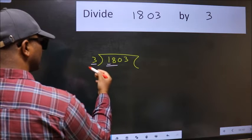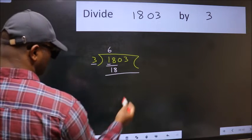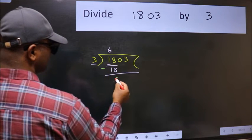When do we get 18 in the 3 table? 3, 6, 18. Now we should subtract. We get 0.